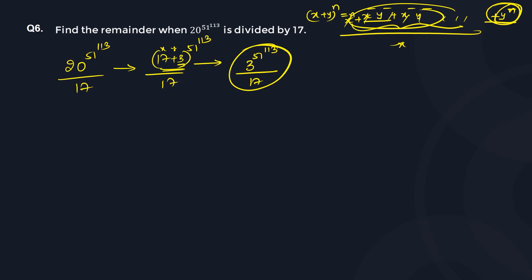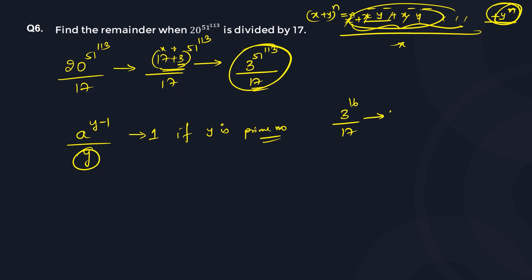We will use Euler's rule, which says that a^(y−1) when divided by y will always give remainder 1, if y is a prime number. So taking y as 17, then 3^16 when divided by 17 should give remainder 1. This is what Euler's rule says.